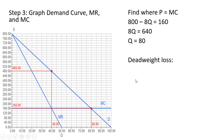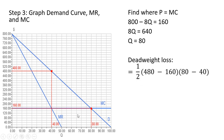The deadweight loss is the area of the triangle between the demand curve and marginal cost, from 40 to 80 units of output. Area of a triangle is one-half base times height. The height is 480 minus 160, and the base is 80 minus 40. This simplifies to a deadweight loss of $6,400.